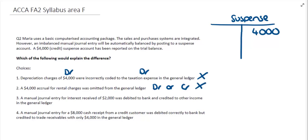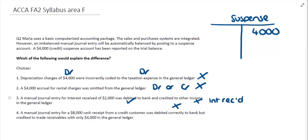The third option tells us that the manual journal entry for interest received of $2,000 was debited to bank and credited to other income in the general ledger. The debit to the bank account was correct, but the credit to other income was incorrect — it should have gone to interest received. However, there is no imbalance between the debit and credit side, so this cannot possibly affect our suspense account.